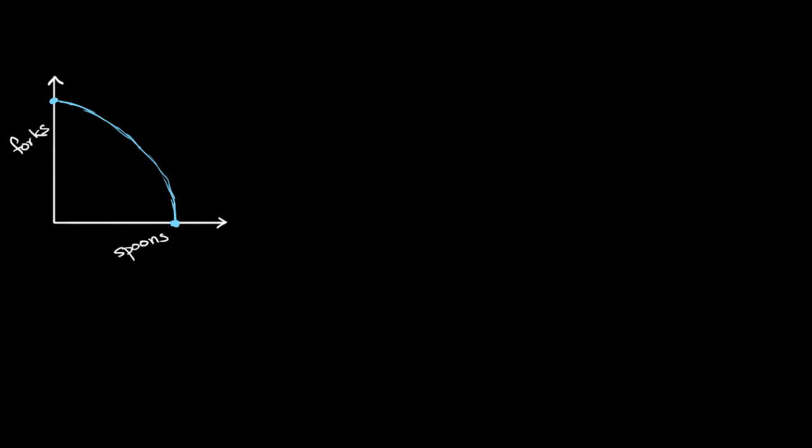What this curve is, this is the production possibilities curve for our country of Utenslandia that makes utensils. Obviously, most countries are much more complex, they don't only produce some combination of two things, but this helps us, this is a nice model for understanding what countries might be capable of.